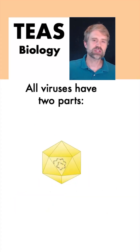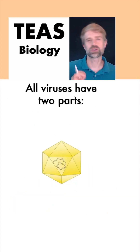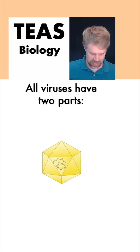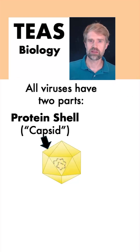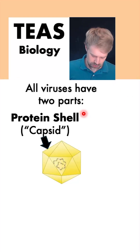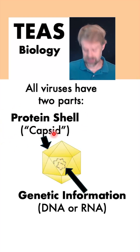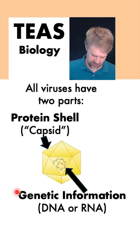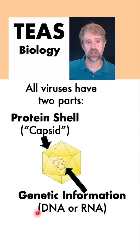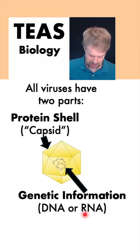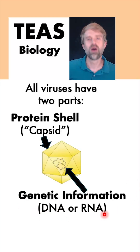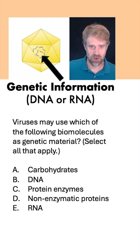Now, viruses are super simple. All viruses have two parts, and that's it. They've got a protein shell on the outside called a capsid, and on the inside, they've got genetic information, which might be DNA or it might be RNA.